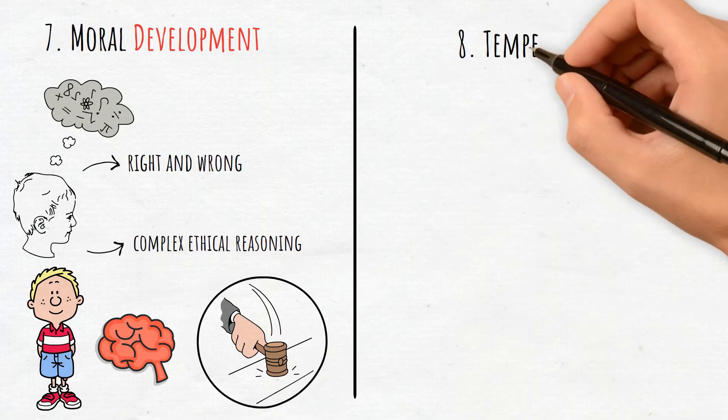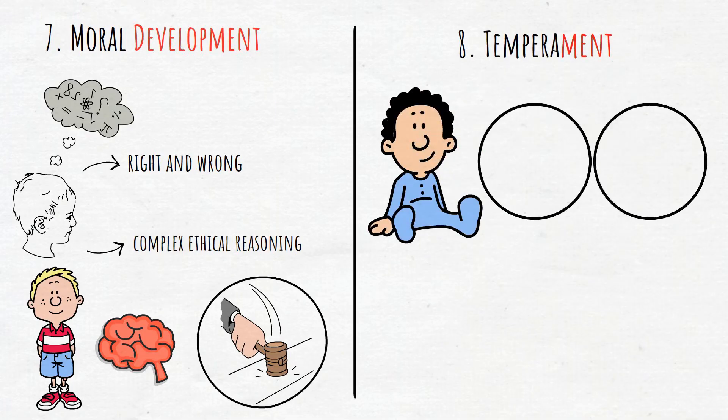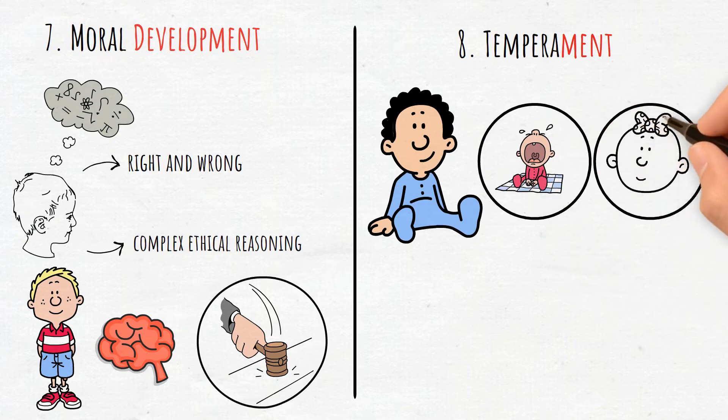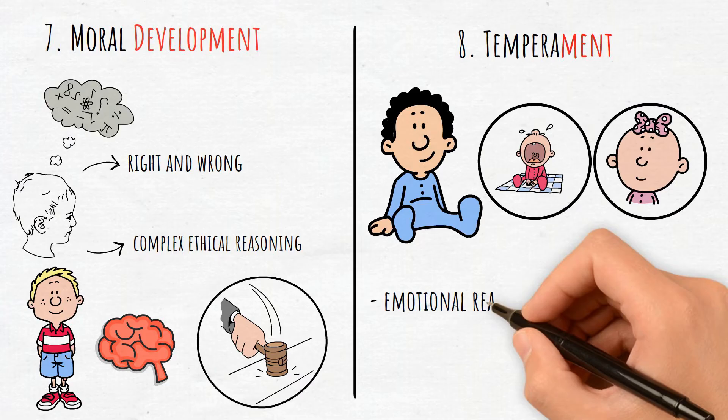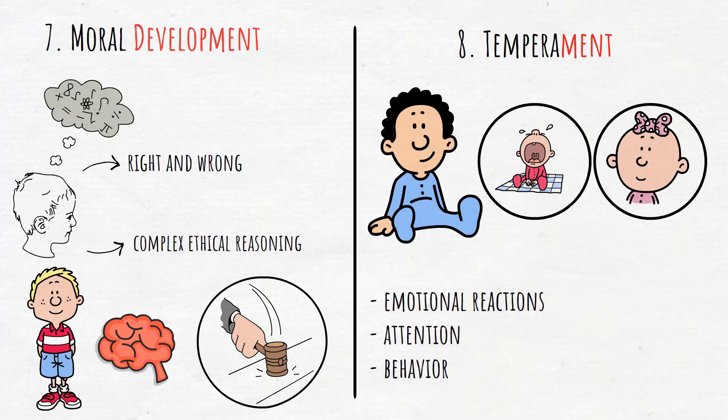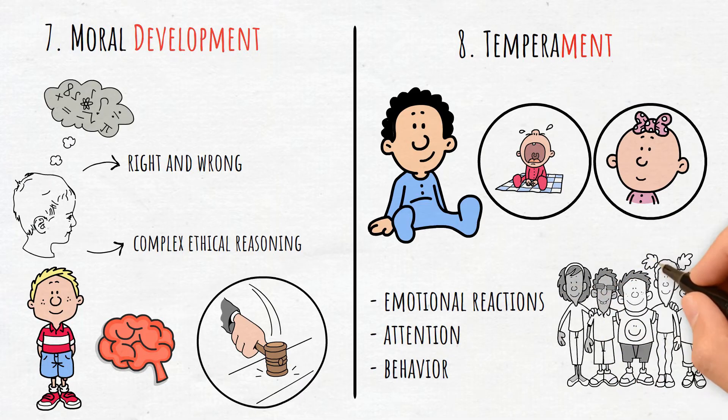8. Temperament. This refers to biologically-based tendencies in how children respond to their environment. Temperament can affect a child's emotional reactions, attention, and behavior, influencing their development across different stages.